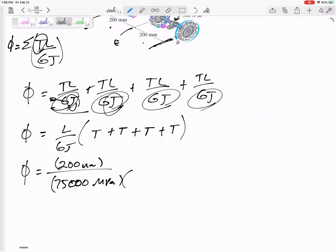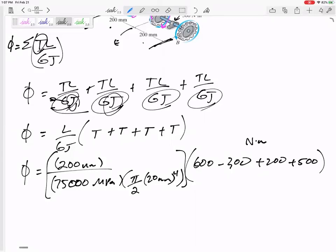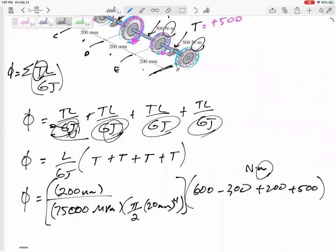The J, let's go to our formula sheet just to slow down and make sure we don't make a mistake. Pi by 2 R to the fourth, not D, not diameter, but radius to the fourth. And now I can multiply. Let's see, what was it? Positive 600 Newton meters, minus 300 Newton meters, plus 200, plus 500, and all of those units are Newton meters. Oh, and there's my problem. Those torques, those moments were in Newton meters.